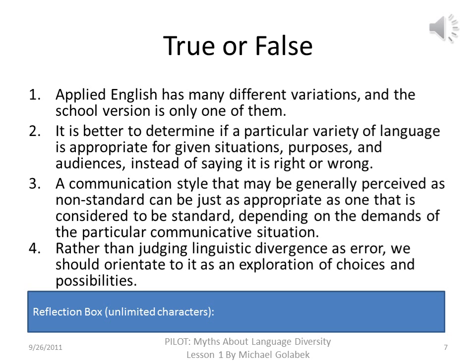1. Applied English has many different variations, and the school version is only one of them. 2. It is better to determine if a particular variety of language is appropriate for given situations, purposes, and audiences, instead of saying it is right or wrong. 3. A communication style that may be generally perceived as non-standard can be just as appropriate as one that is considered to be standard, depending on the demands of the particular communicative situation. 4. Rather than judging linguistic divergence as error, we should orientate to it as an exploration of choices and possibilities.